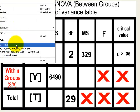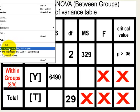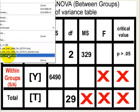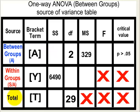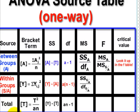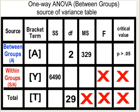Let me pull it up real quick. There it is. This also shows you how to do the bracket terms, but in this problem I've already given you values — some of the values for sum of squares, degrees of freedom, mean squares, etc. So you've got to fill in this side of the blanks. Let's get started.